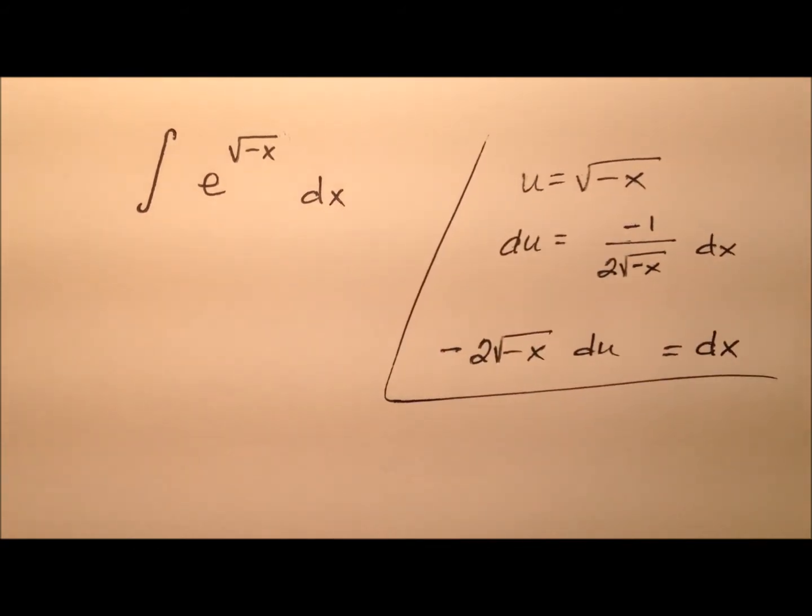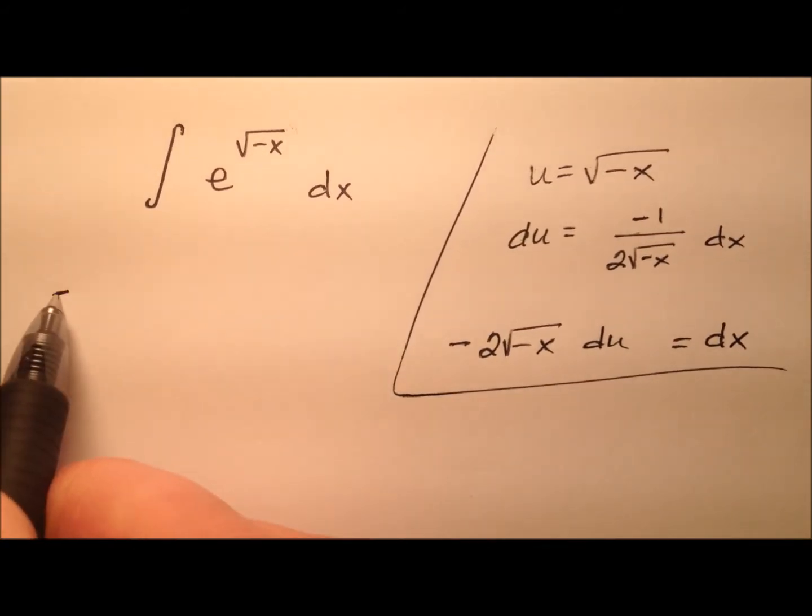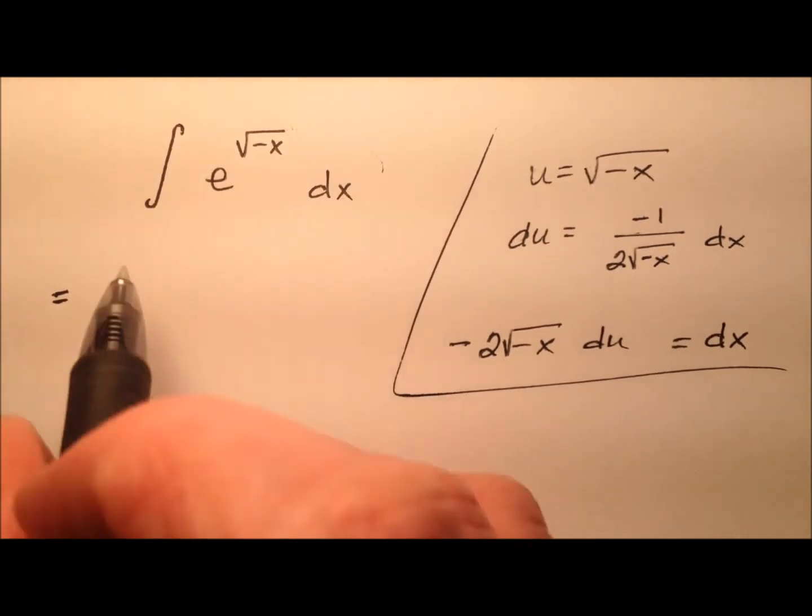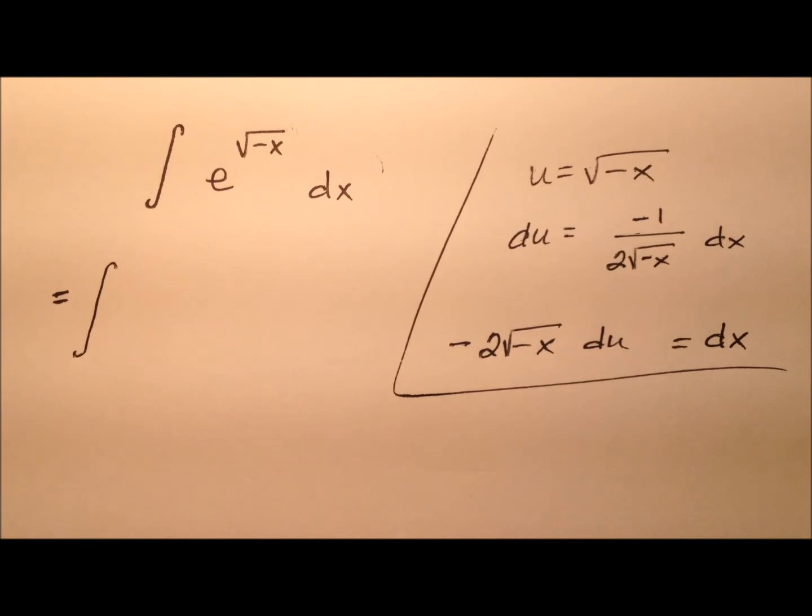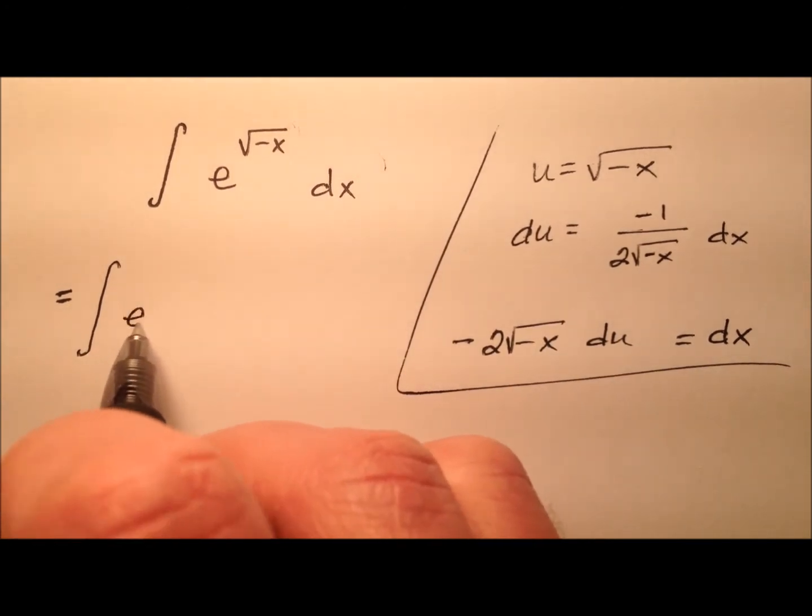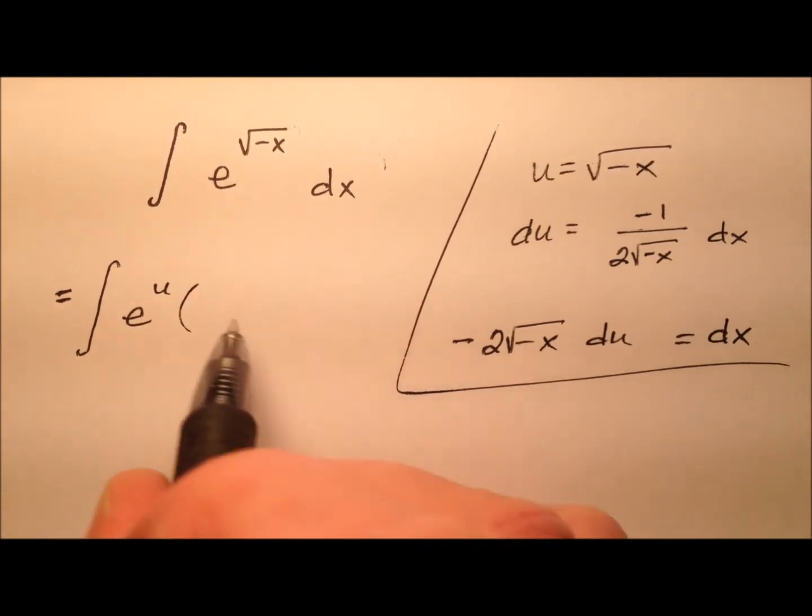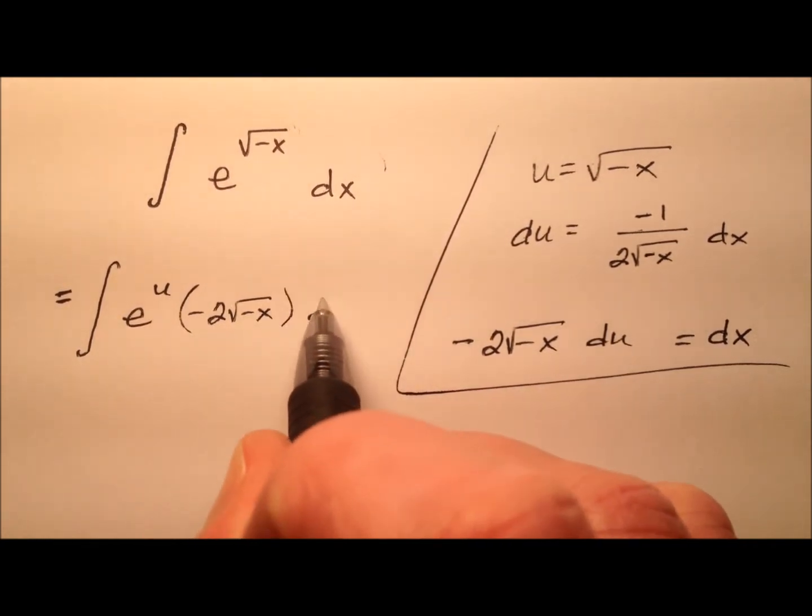Okay, so we'll kind of put that aside for a second, and let's go ahead now and rewrite this integral. Instead of being in terms of x, let's do it in terms of u. And so it'll be e to the u, and replacing this dx, we'll replace it with negative 2 times that square root of negative x du.